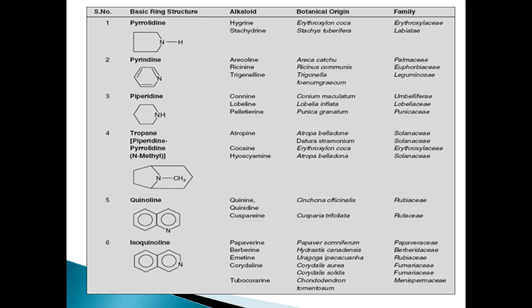The second class is pyridine. The heterocyclic ring of pyridine is a six-membered ring. Examples of alkaloids are trigonelline and arecoline. Areca catechu is the botanical origin of arecoline. Trigonella foenum-graecum is the botanical origin of trigonelline. Family is Palmaceae for arecoline and Leguminosae for trigonelline.